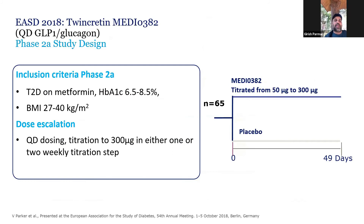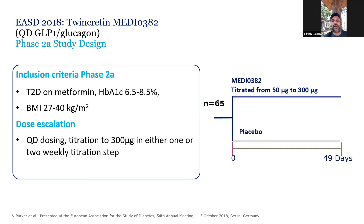MEDI-0382 is another molecule being explored — it involves simultaneous stimulation of the GLP-1 receptor and glucagon receptor. This is another molecule being actively explored with simultaneous stimulation of GLP-1 and glucagon. In this study, this molecule was compared with placebo in a phase 2A dose-finding study. The dose used was about 300 micrograms with one or two weekly titrations. The duration and number of patients are relatively smaller, as expected for a phase 2 study.